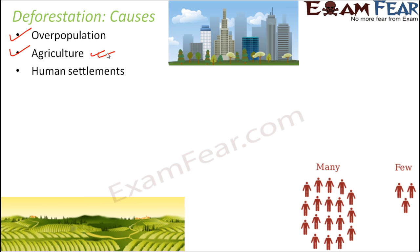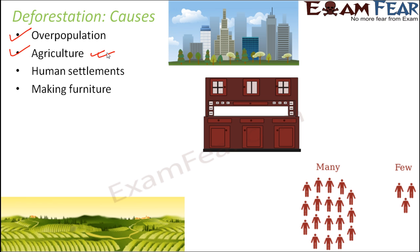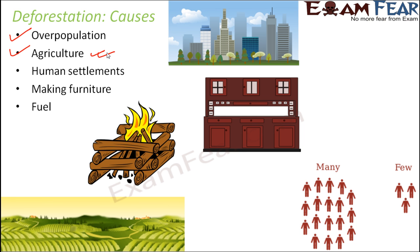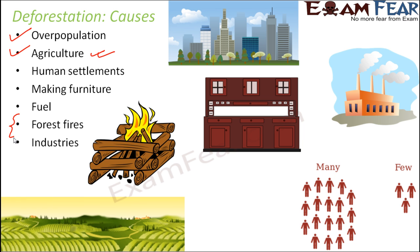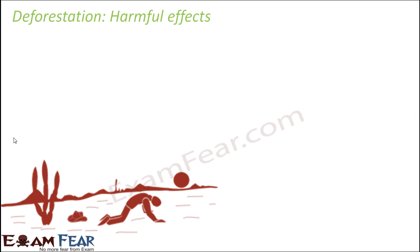Other causes of deforestation include making furniture, since large trees are cut down for that purpose. Wood also acts as an excellent fuel, so trees are cut for that reason as well. Forest fires are a natural cause — when due to lack of rainfall, trees and leaves become so dry that they catch fire in sunlight, causing tremendous loss of trees. Setting up of industries and factories is another cause.